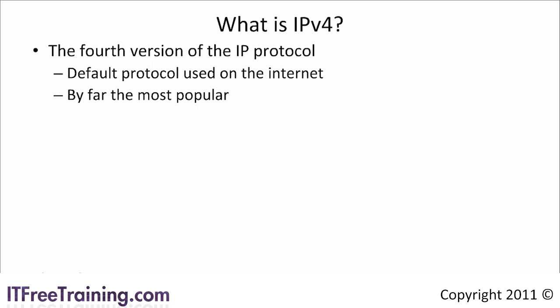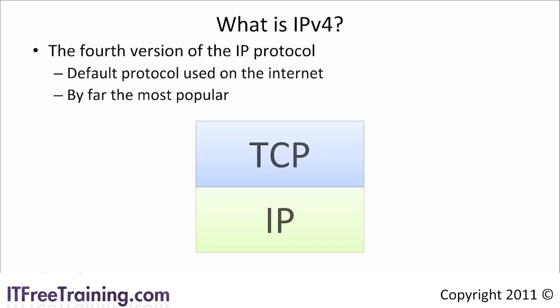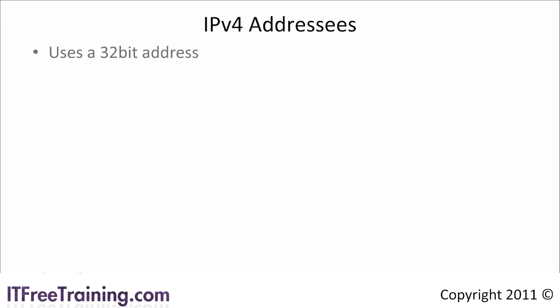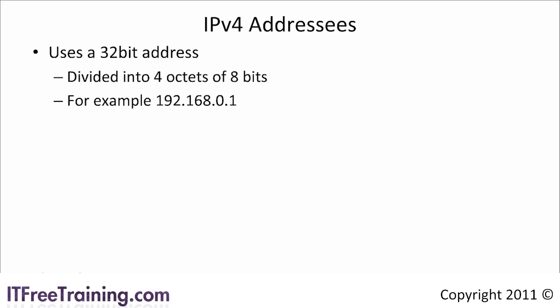To understand how IP version 4 works, consider this. The IP and the TCP protocols combine together to provide a complete network solution. TCP is responsible for keeping messages in order and transmitting data when lost, while the IP part is simply responsible for sending packets from one location to another. IP version 4 addresses are 32 bits long. They are divided into 4 octets of 8 bits separated by dots to make reading easier. For example, 192.168.0.1.